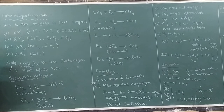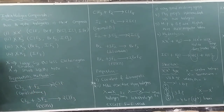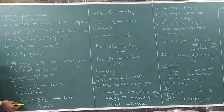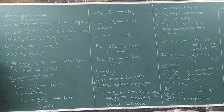To prepare XX' type compounds like ClF, we take chlorine and fluorine in equal molar ratio. Since both are gas molecules, you can take equal values and you will get an XX' type compound like ClF. To produce an XX'3 type compound like ClF3, you take one mole of chlorine and three moles of fluorine.